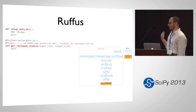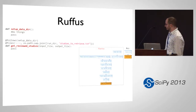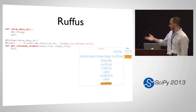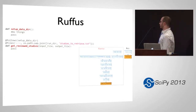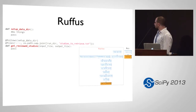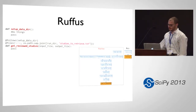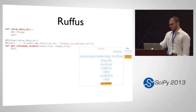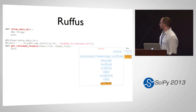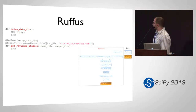Rufus can restart failed stages, and it can automatically draw dependency diagrams. The upper right-hand corner shows the two functions there.